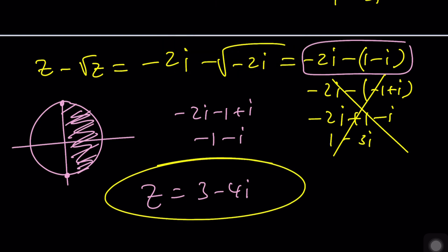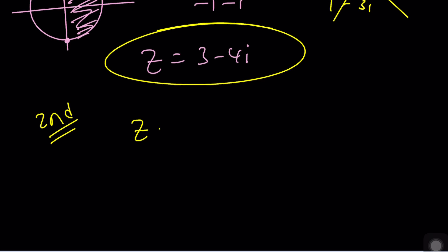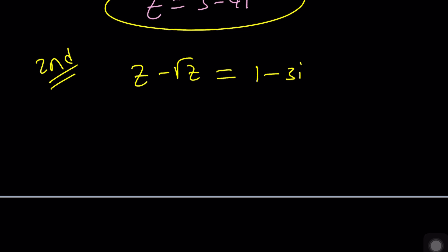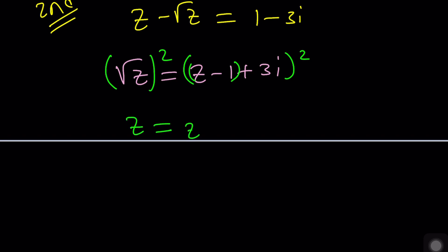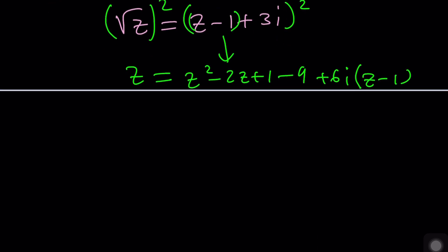Let's take a look at the second method because I think it's also pretty interesting. We're going to isolate the radical. Let's put the radical z on the right and bring everything else to the left. And now we're going to square both sides. This gives me z equals z squared minus 2z plus 1 which is z minus 1 squared and then minus 9 which is 3i squared and then plus 6i times z minus 1. Go ahead and arrange this. You're going to get a quadratic equation and it's going to look like this at the end.